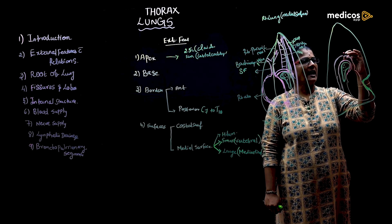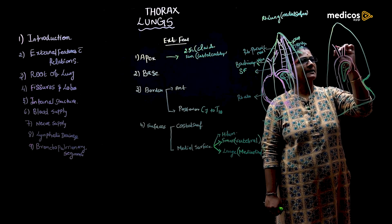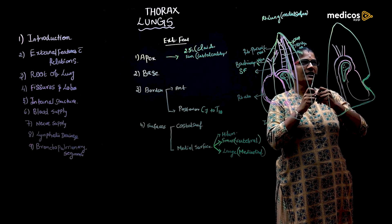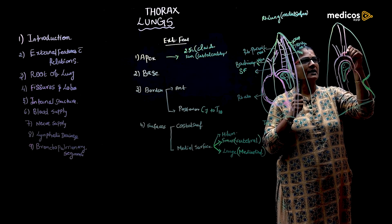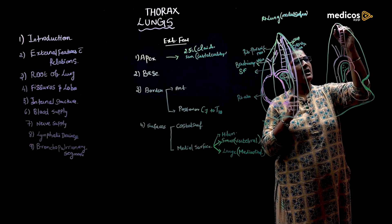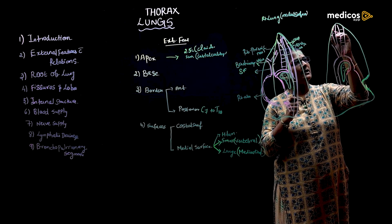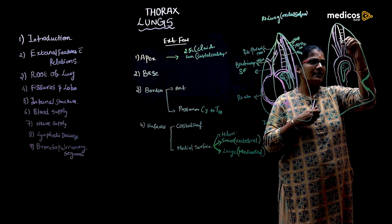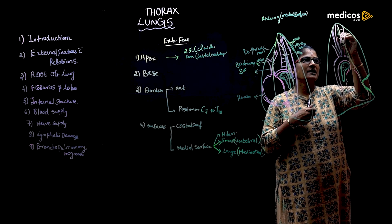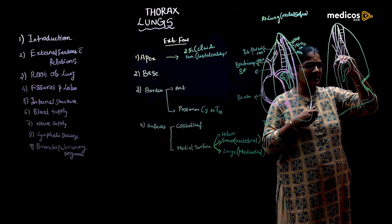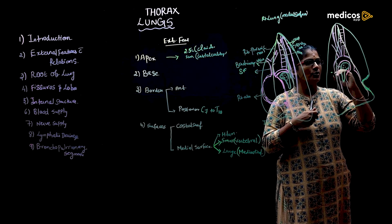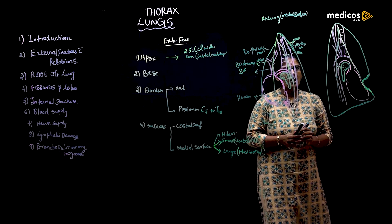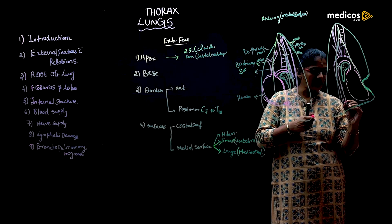The left lung is also related to the trachea, the esophagus, and the left sympathetic chain. The nerve relations: anteriorly to the hilum is the left phrenic nerve; posteriorly is the left vagus nerve, which also forms the recurrent laryngeal nerve on the left side.